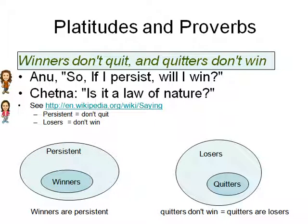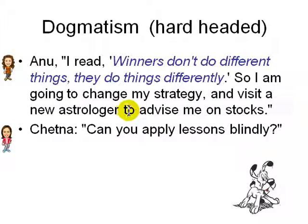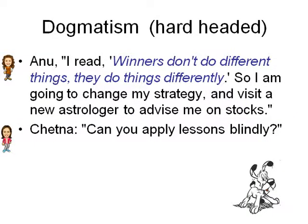Anu doubles down with another platitude: 'Winners don't do different things — they do things differently.' So she announces she will change her strategy and visit a new astrologer to advise her on stocks. Chetan responds: 'Can you apply these lessons blindly?' This reveals further flaws in her logical reasoning — she's changing the astrologer instead of her financial strategy.